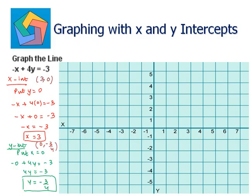So 3 comma 0 lies here on the graph, and 0 comma negative 3 by 4 lies here on the graph. We can join these two points together to form a straight line. And this is the graph of the line negative x plus 4y is equal to negative 3.